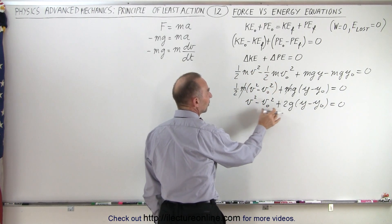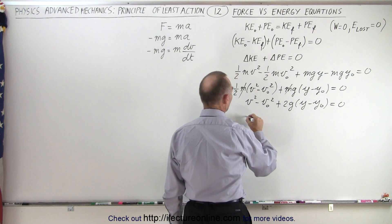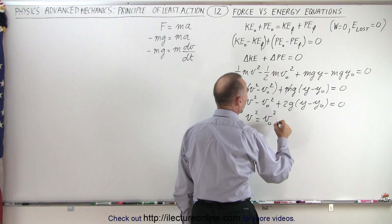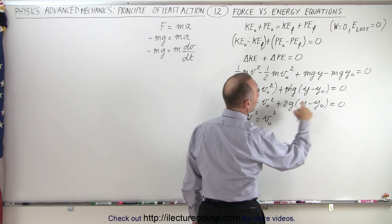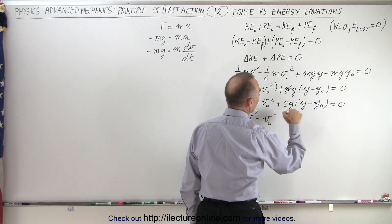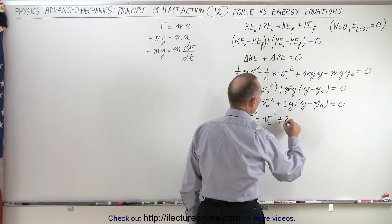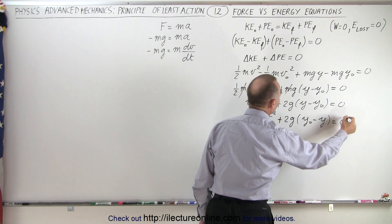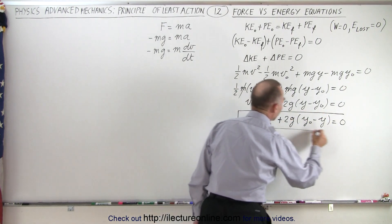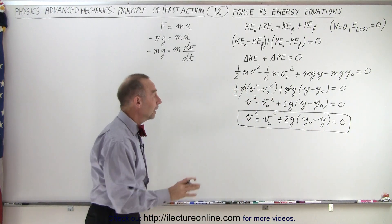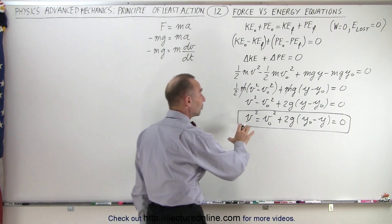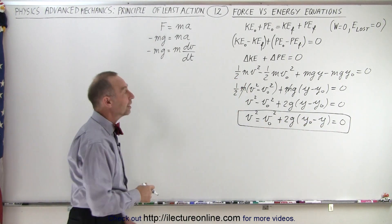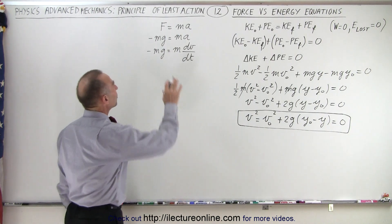Now we move terms to the other side. V_final squared equals V_initial squared — moving that across makes it positive. The 2G term becomes negative, but we make it positive by switching the height terms around, giving us plus 2G times Y_initial minus Y_final. And there's our equation of kinematics. It doesn't depend on time — only on the initial velocity, final velocity, initial height, and final height. Remember, this is a particle under the influence of gravity.